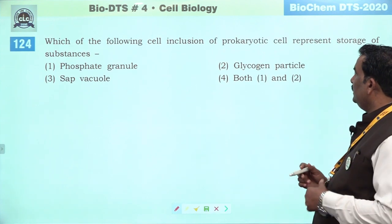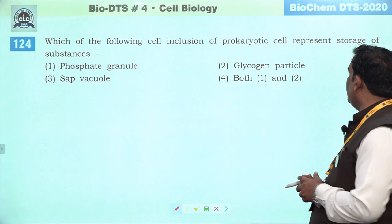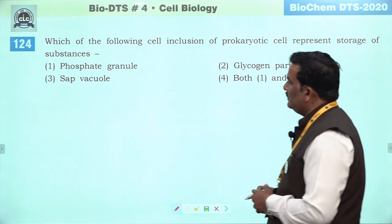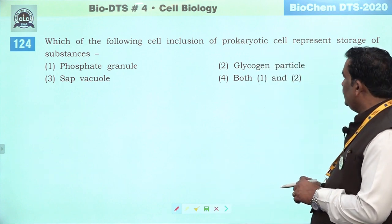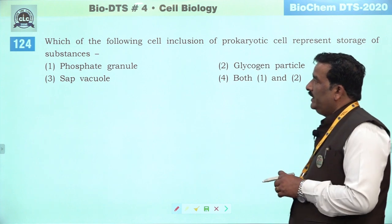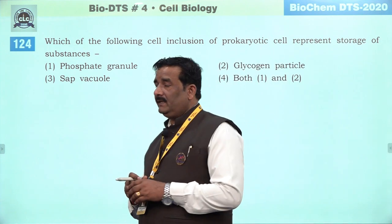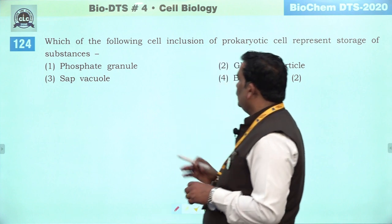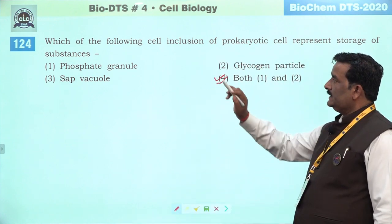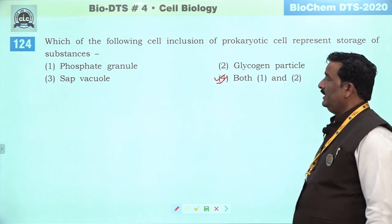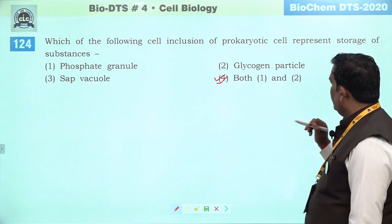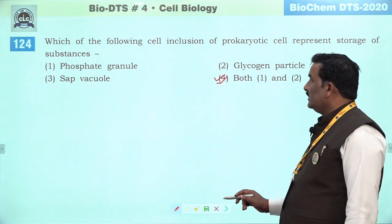Next question: which of the following cell inclusions of prokaryotic cell represent storage of substances. Glycogen particle jo glycogen ko karenge, phosphate particle — inhein volutin particle bhi kehte hain — yeh dono kahin na kahin substance ke storage se relate kar rahe hain. Gas vacuole mein gas ka storage hota hai, lekin exactly jo substance hai, jo reserve food hai, woh aapke first and second mein hai.